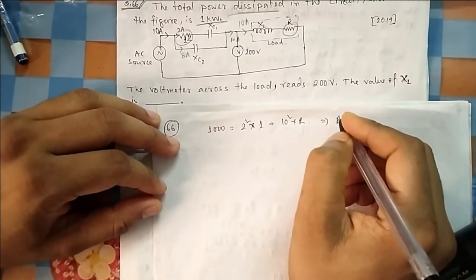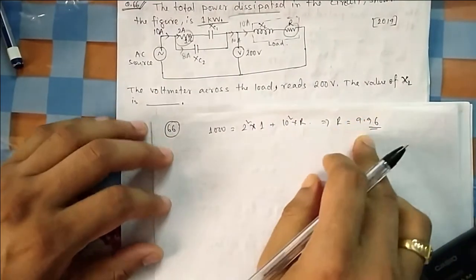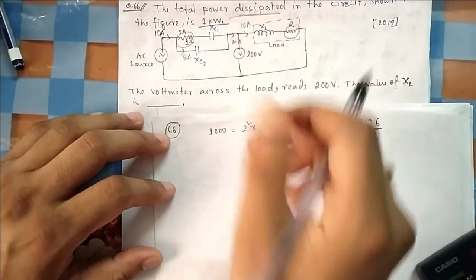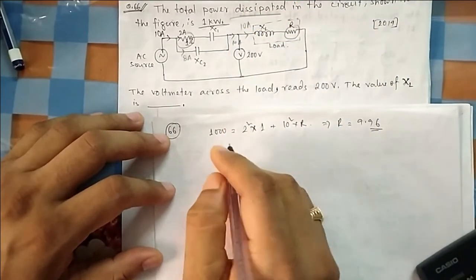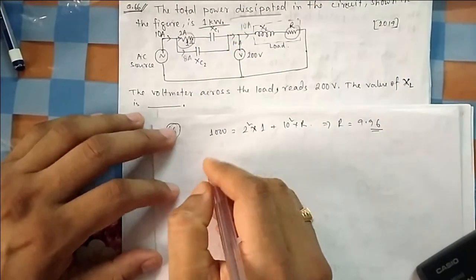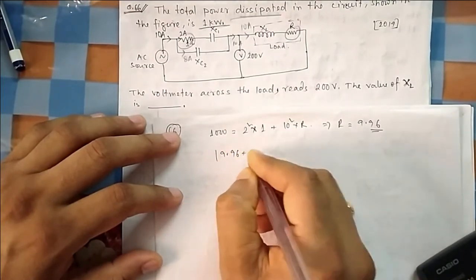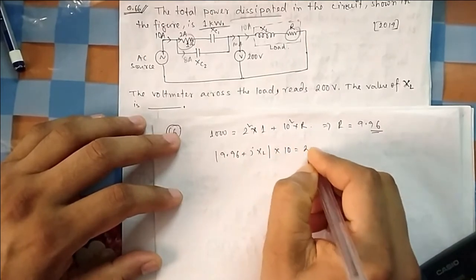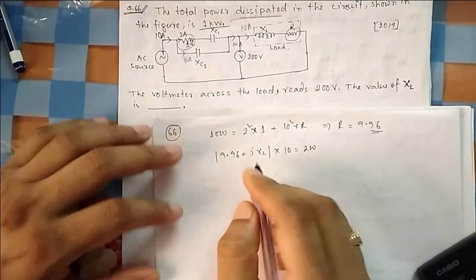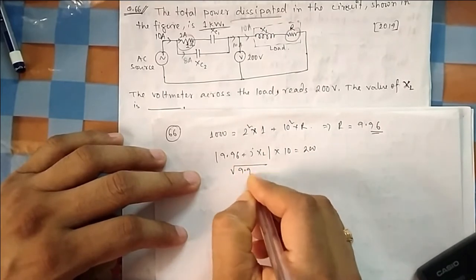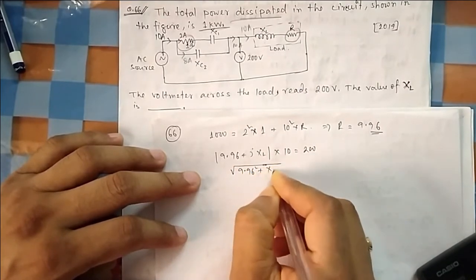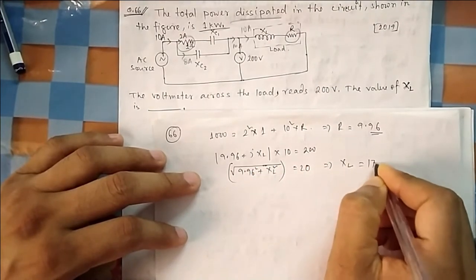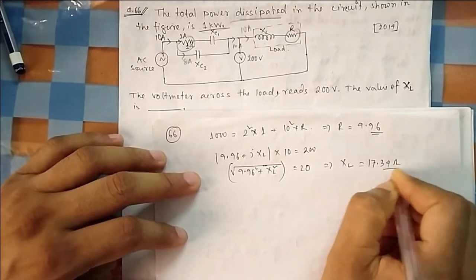So 1000 = 2² × 1 + 10² × R. Solving this, you find R ≈ 9.96 Ω. Once you know R, you can find the voltage. The magnitude of (9.96 + jXL) multiplied by 10 equals 200 volts. Solving: 9.96² + XL² = 20², which gives XL = 17.3.